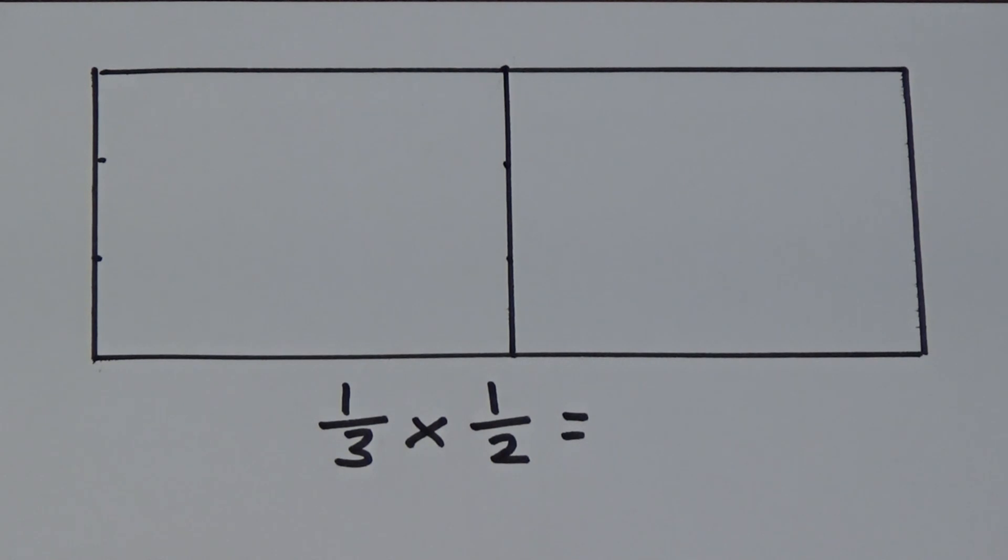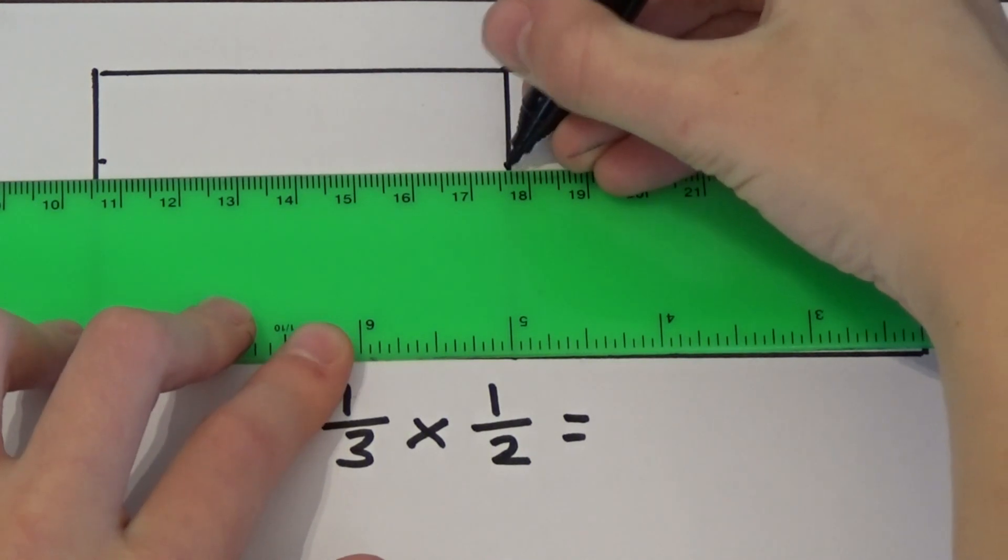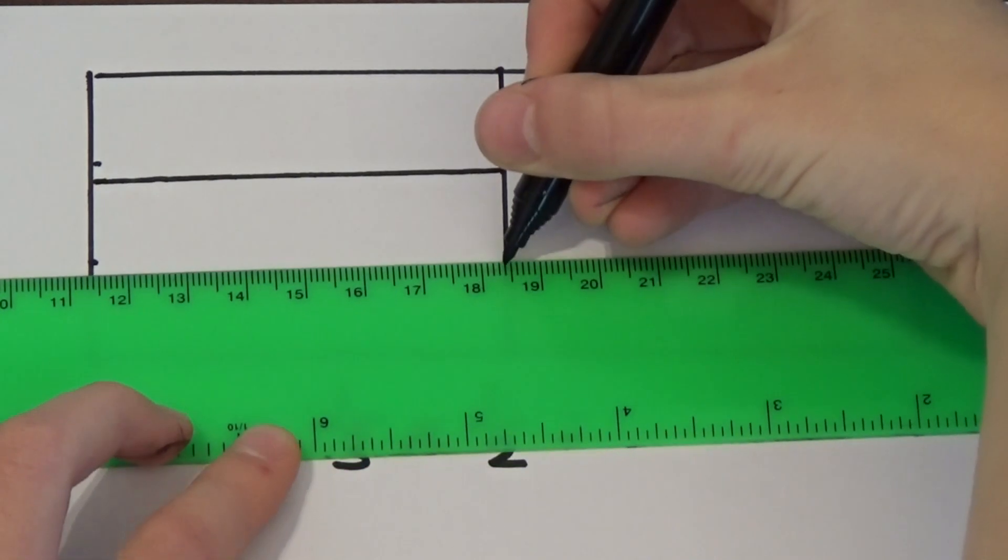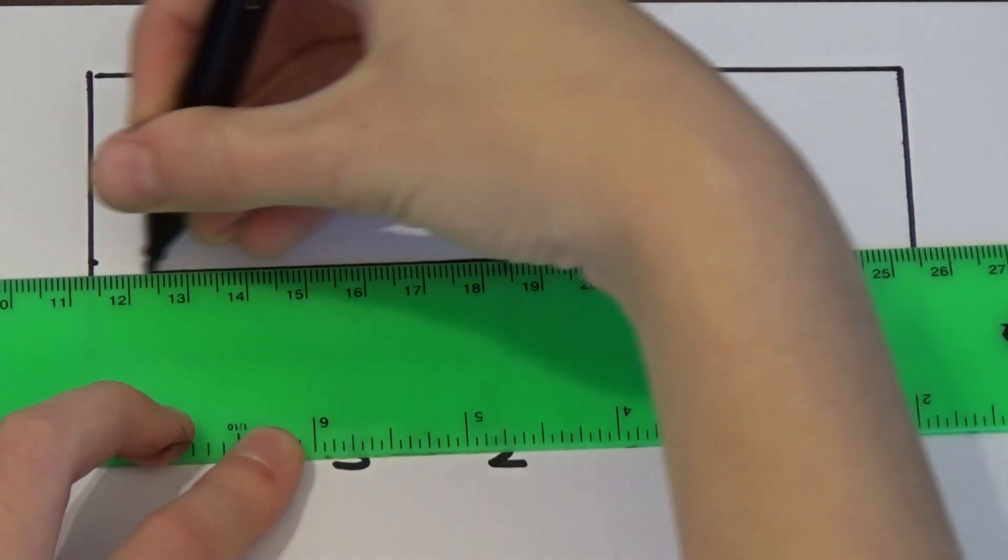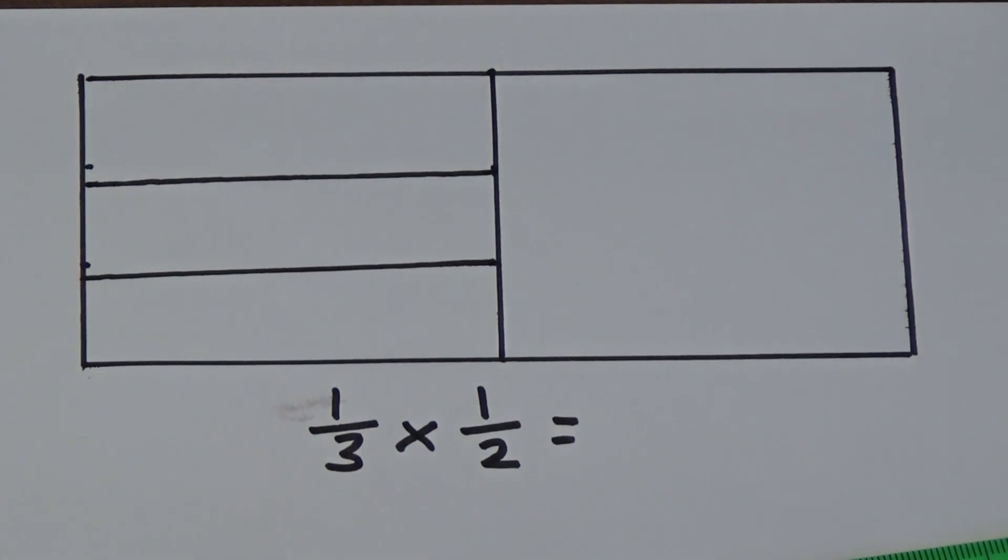I can also draw a diagram to help me. Here I've split a rectangle into halves. A third of a half means I need to split my half into thirds. So a third times a half equals one sixth.